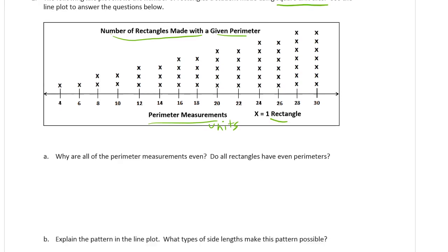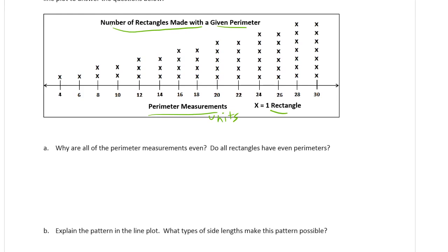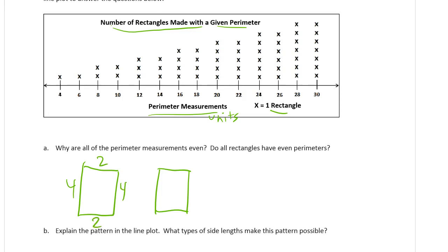Why are all of the perimeter measurements even? Do all rectangles have even perimeters? Well, let's think about that for a minute. What we figured out in a lot of the work we've done with rectangles is that the perimeter is always a double — whatever the length plus the width is, you double it — so it's always going to be a double.